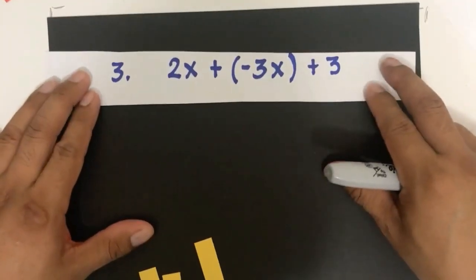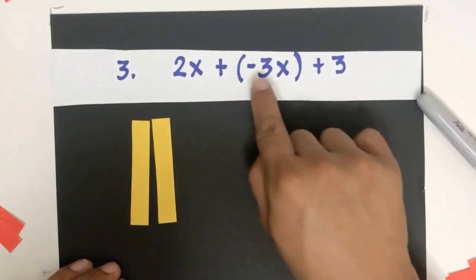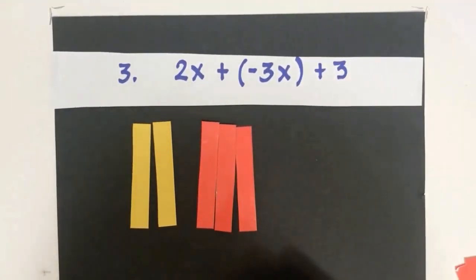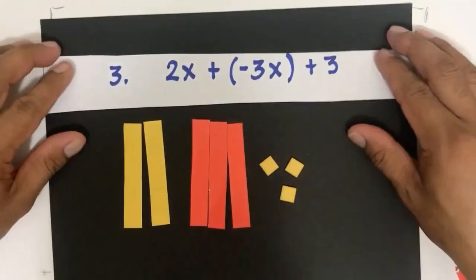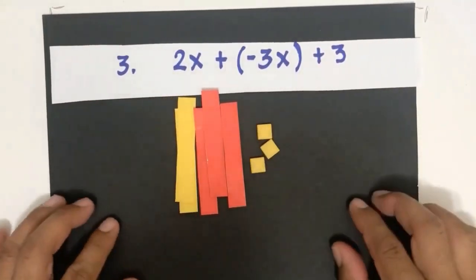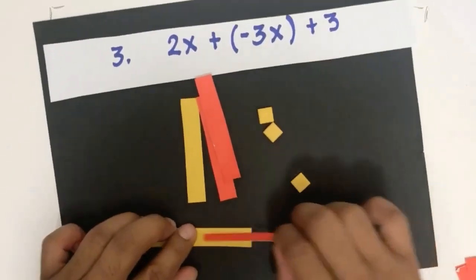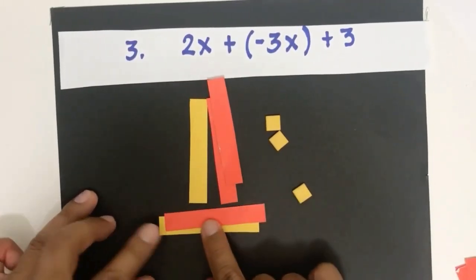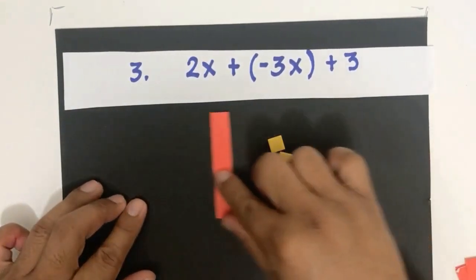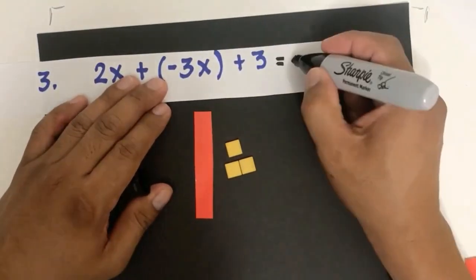How do we simplify 2x plus negative 3x plus 3? We represent 2x, add negative 3x (three red x's), and add 3. Combining them, we look for zero pairs. One yellow x and one red x form a zero pair and are removed. Another pair is removed as well. What is left is negative x and positive 3, giving us negative x plus 3.